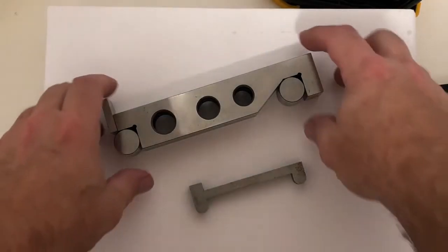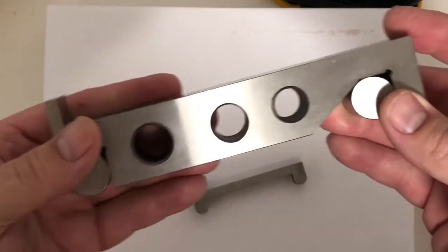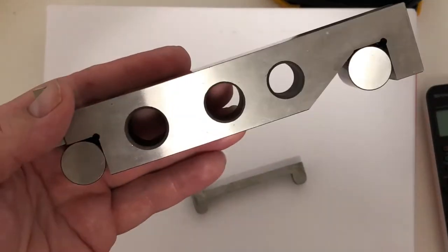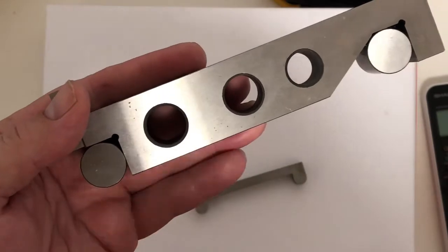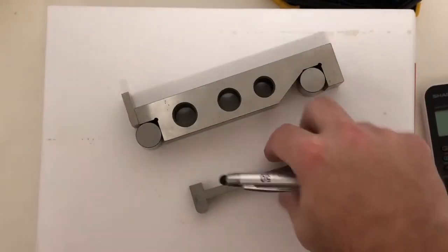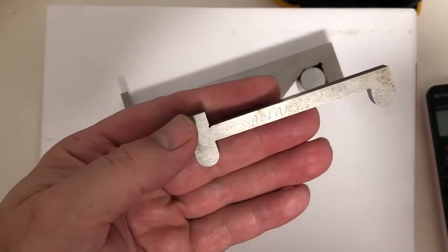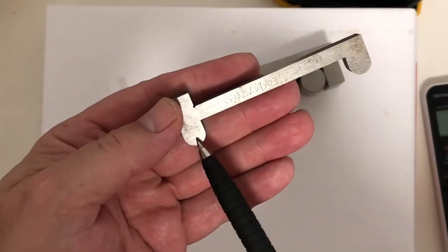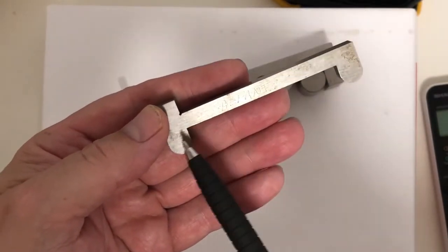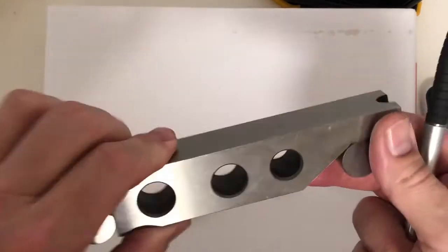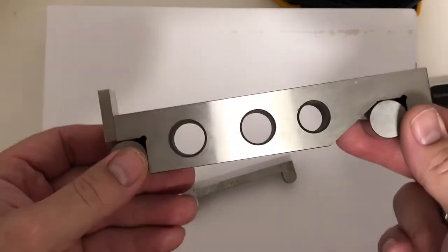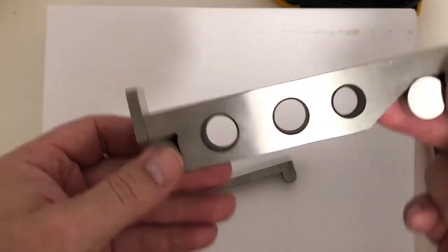Sine bars. This is a five inch sine bar. Between the center of this pin and the center of this pin is exactly five inches. This is a micro three inch sine bar. Between the center of here and the center of here is three inches. So what do we use a sine bar for? For making angles. Very accurate angles.